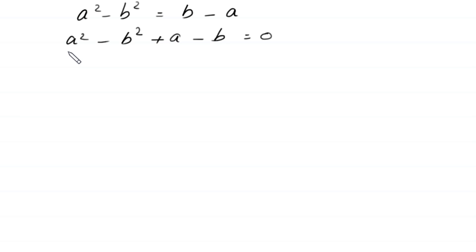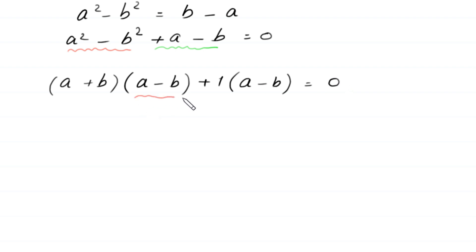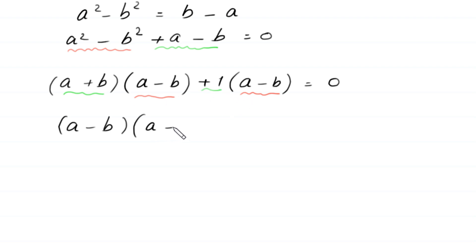By using the algebraic identity, a squared minus b squared becomes (a plus b)(a minus b). From the two terms plus a minus b, we factor out plus 1 as a common factor, giving plus 1 times (a minus b). So the expression a minus b is a common factor throughout, and we factor it out to get (a minus b)(a plus b plus 1) equals 0.